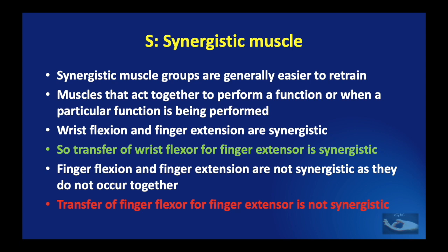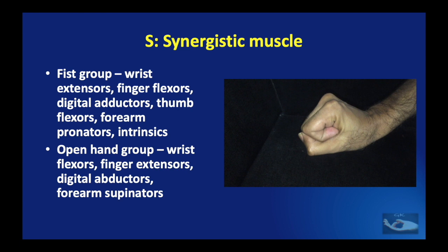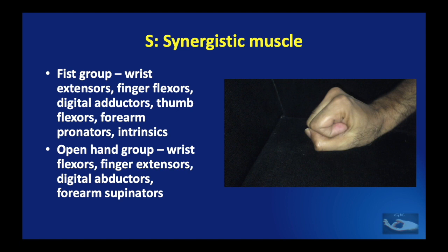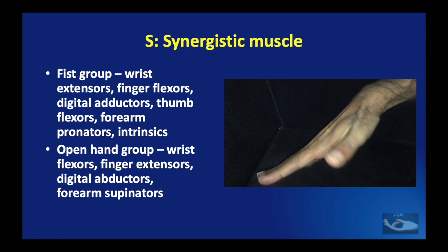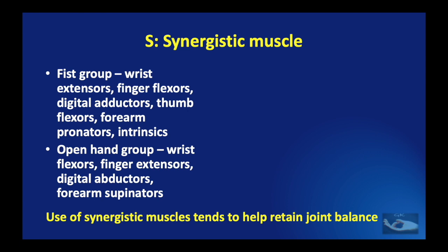To remember which are the synergistic muscles, we can remember two groups. The fist group consists of wrist extensors, finger flexors, digital adductors, thumb flexors, forearm pronators, and intrinsics — any of these can be transferred to replace any of the others. The open hand group consists of wrist flexors, finger extensors, digital abductors, and forearm supinators — within this group, tendon transfers can similarly be done. But tendon transfers are not advisable between muscles of these two groups, as it is important to use only synergistic muscles to help retain the balance of the joints.